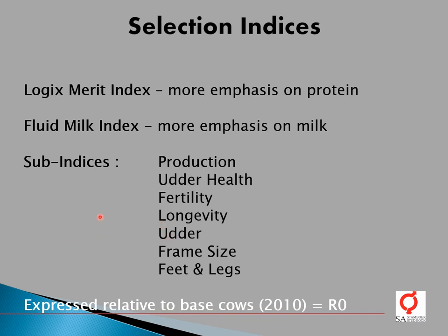When talking about selection indices in dairy cattle, the first and most important overarching general selection index is the so-called Logics Merit Index in South Africa, which some farmers use. There is quite an emphasis on protein because most milk buyers emphasize protein — milk richer in protein results in more cheese or a higher cheese yield. But the Logics Merit Index includes all production traits as well as the secondary traits, which are equally important.